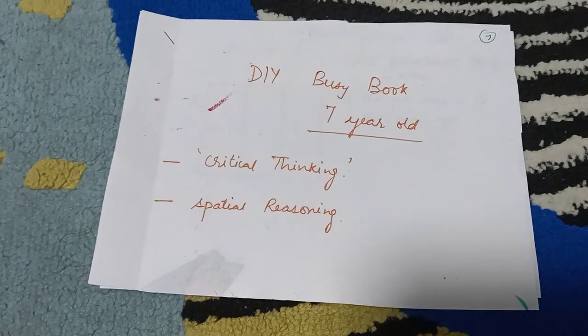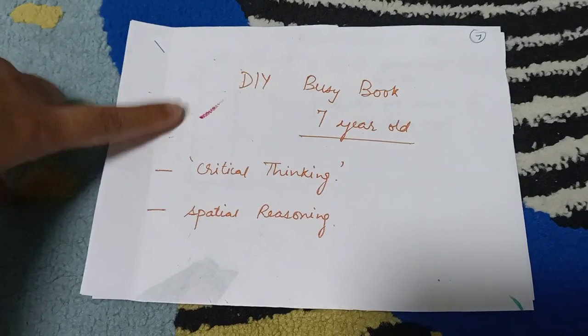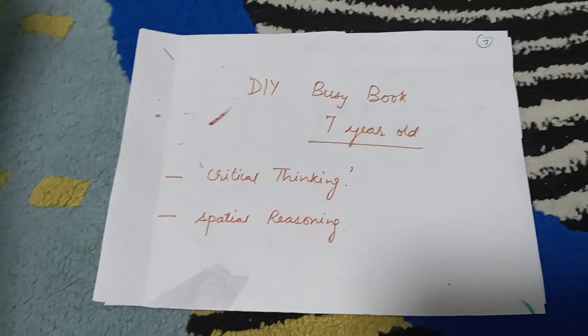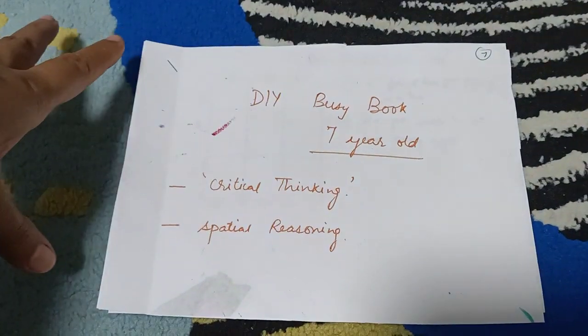Hello everyone, I'm Soda B. Welcome to my channel. Today's busy book is for my seven-year-old. She just turned seven years old. She's a year in baby, and here we are doing critical thinking and spatial reasoning.